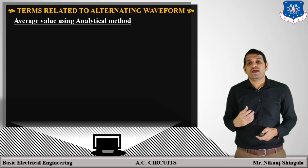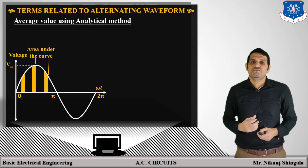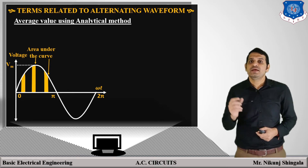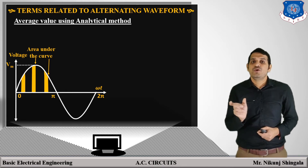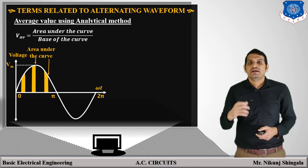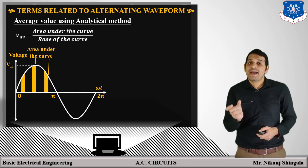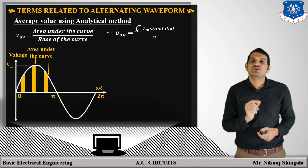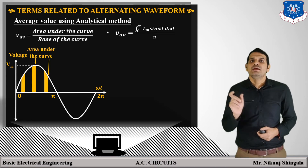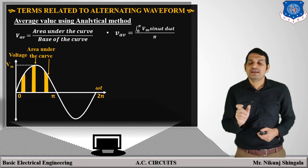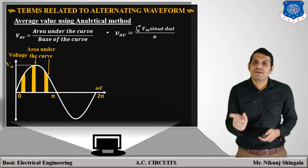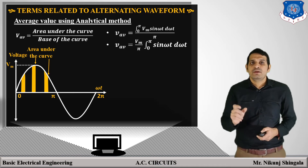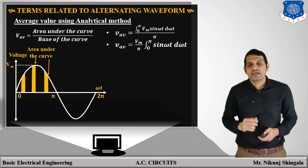Next, determination of average value using the analytical method. Considering the voltage waveform V = Vm sin(ωt), where Vm is the maximum amplitude, spread over 0 to 2π. The average value is the area under the curve divided by the base of the curve. The area under the curve can be calculated using integration. So V_avg = (1/π) × integration from 0 to π of Vm sin(ωt) d(ωt), taking Vm/π outside as it is constant.